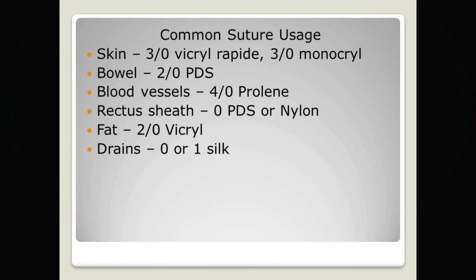When anastomosing bowel, a 2-0 PDS is commonly used, which is an absorbable monofilament suture. Anastomosis of blood vessels requires a smaller diameter suture such as a 4-0 Prolene. For closure of the rectus sheath, you need a suture that will maintain its tensile strength for longer while the thick tissue heals — commonly used examples include a 0 PDS or nylon.